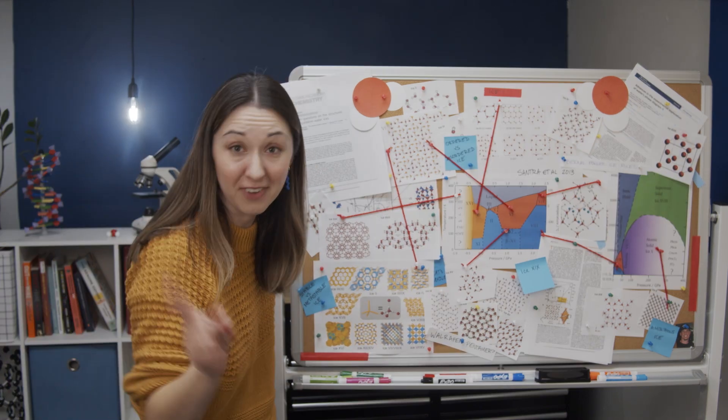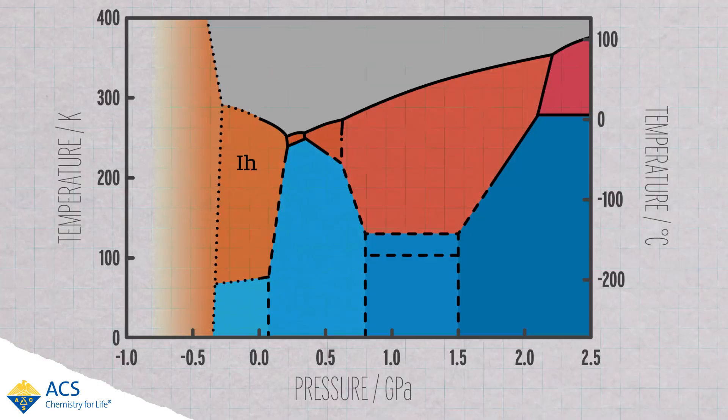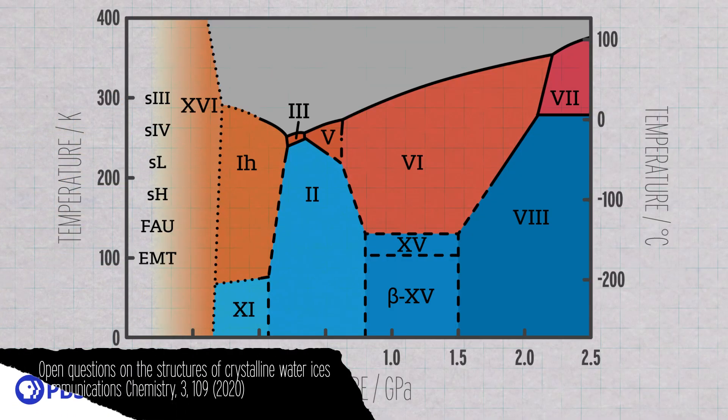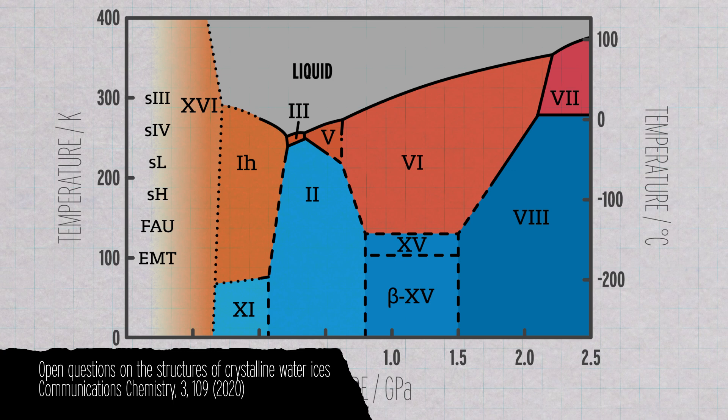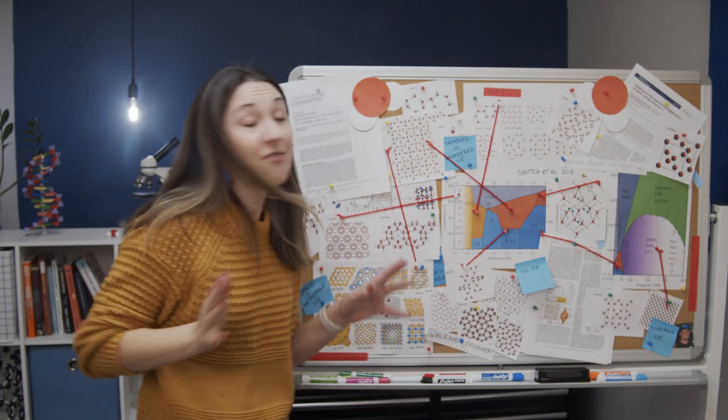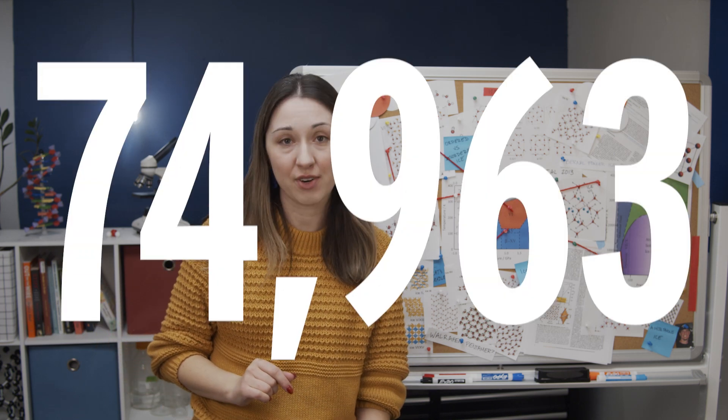Not only is ice fascinating, but all that stuff I just mentioned is ice one. But there's also all these other kinds of ice, plus more that can't even be represented here. We don't even know how many kinds of ice there are. However, we have found about 20 so far, but there could be as many as 74,963.